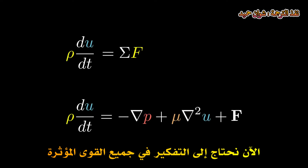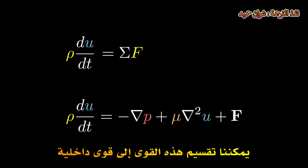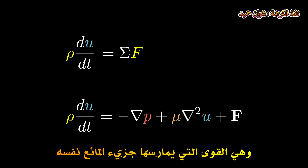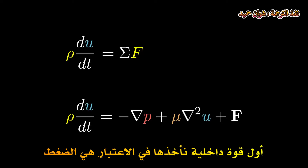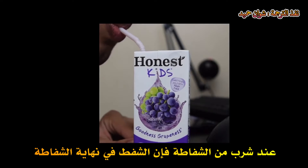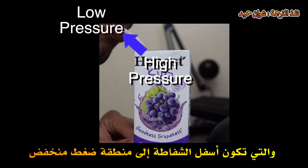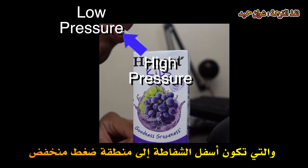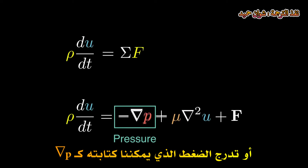Now we need to consider what forces are acting on this molecule of a fluid. We can break this down into internal forces, exerted by the molecule of the fluid itself, and external forces, exerted by some external object. The first internal force we take into account is pressure. Consider drinking from a straw — sucking on the end creates an area of low pressure, which forces the drink to move from the area of high pressure below to the area of lower pressure. This force is dependent on the change in pressure, or the pressure gradient, which we write as ∇p.